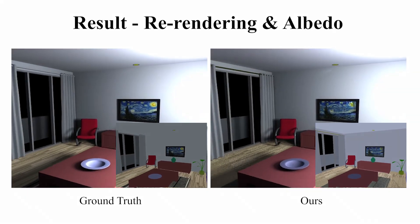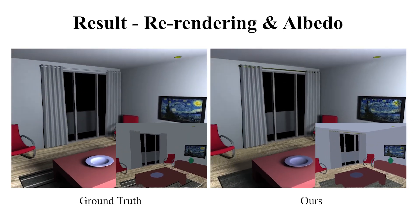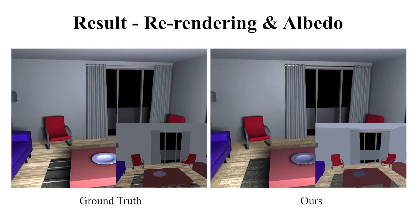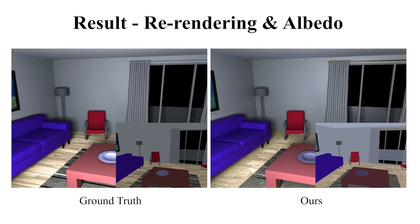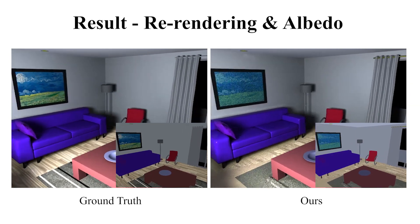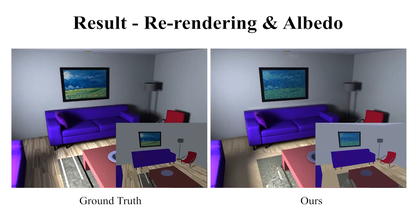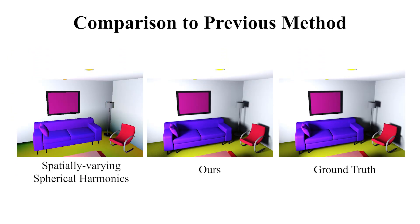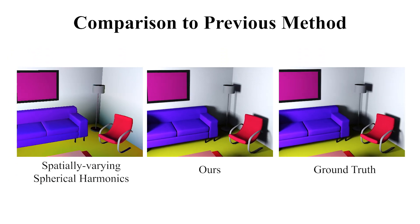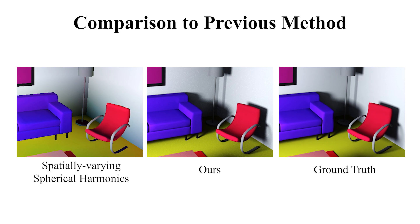Here we show that our reconstructed rendering matches the ground truth and the estimated albedo textures match the original ones. The use of a physically based method allows us to correctly handle occlusions.